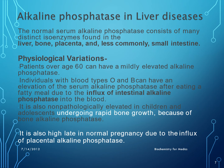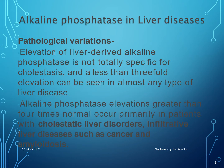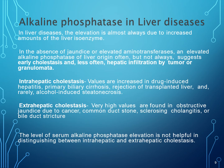Alkaline phosphatase is also non-pathologically elevated in children and adolescents undergoing rapid bone growth due to bone alkaline phosphatase, and is high in normal pregnancy due to the influx of placental alkaline phosphatase. Pathologically, elevation of liver-derived alkaline phosphatase is not totally specific for cholestasis alone, and a less than threefold elevation can be seen in almost any type of liver disease. Elevations greater than 4 times normal occur primarily in cholestatic and infiltrative liver disorders such as cancer and amyloidosis.